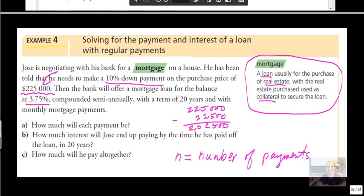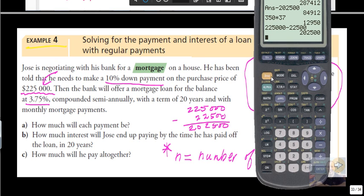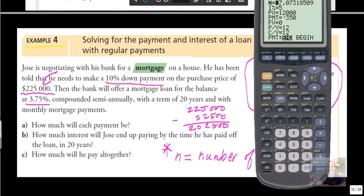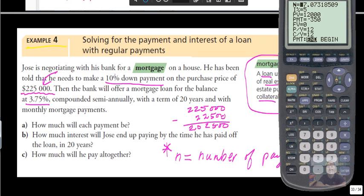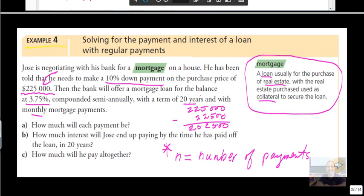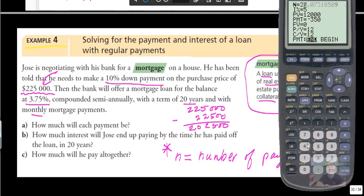And so, if you want to find out how much each payment will be, you can use your TVM solver, noting that N is the number of payments. So, let's go to the TVM solver here. Apps, finance, TVM solver. How much will each payment be? Well, we are paying, let's see here. Where does it say balance? 20 years, monthly mortgage payments. So, it's 20 times 12. That's 240. Wow, you're smart. Interest rate, 3.75. Present value, $202,500, it's owed on the house.